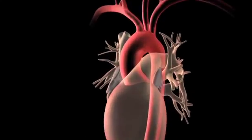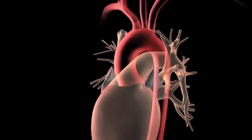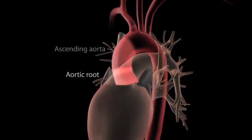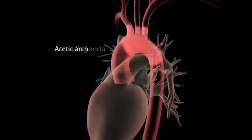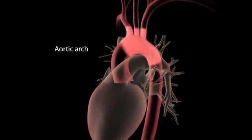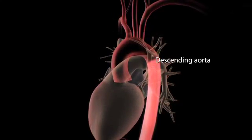The thoracic aorta has four parts: the aortic root, ascending aorta, aortic arch, and descending aorta.